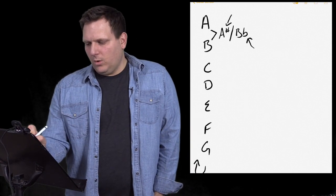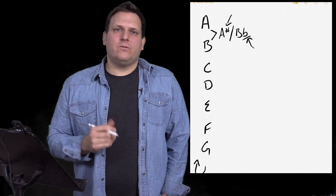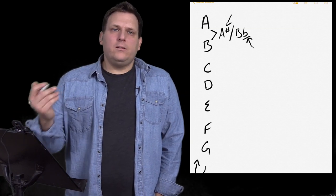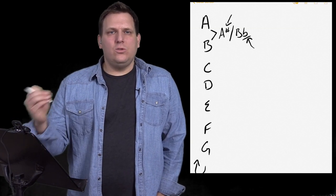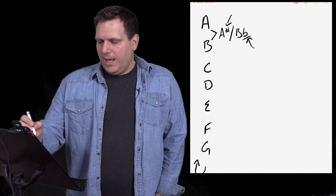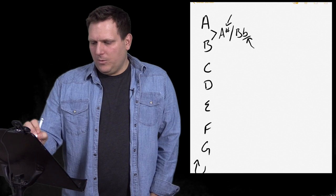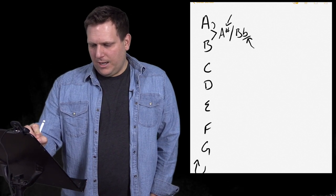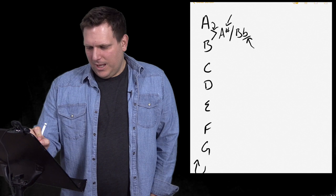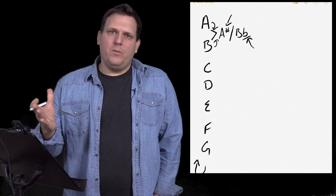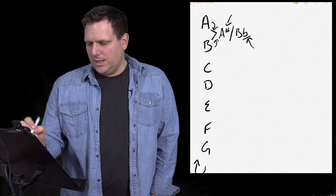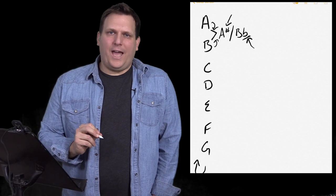And that little lowercase b means flat. So why does this note have two different names? Well, generally speaking, if I'm going from A and I'm going this direction, I'm going to call it A sharp. If I'm going the other direction, if I'm on the B and I'm going down to it, I'm going to call it B flat.